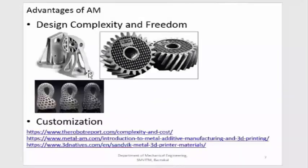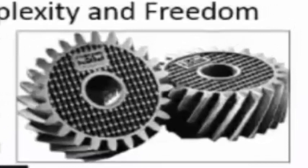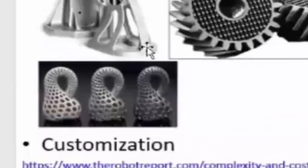Now, what are the advantages of additive manufacturing? The first advantage is design complexity and freedom — the ability to create very complex parts. You can see components that are mostly hollow from every side with solid material on the outer surface. This is possible because we build layer by layer. You can also see a gear where material is completely removed to reduce weight while retaining the required strength for power transmission. Complex artistic pieces that are very difficult or impossible to produce by conventional methods are easy to produce with additive manufacturing.